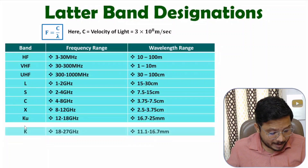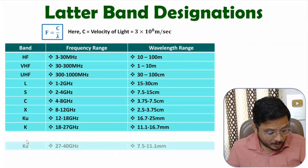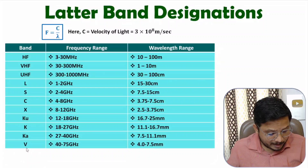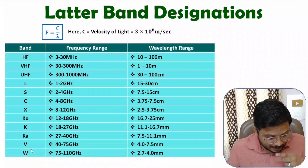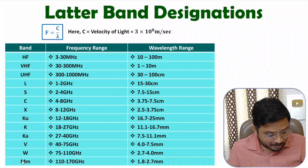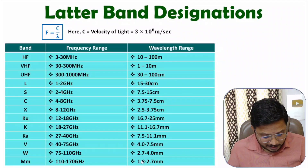After that, we have K band, having frequency from 18 to 27 gigahertz. After that, we have Ka band, having frequency range from 27 to 40 gigahertz. Then we have V band, having frequency from 40 to 75 gigahertz. After that, we have W band, having frequency from 75 to 110 gigahertz. After that, we have the Millimeter band (MM band), having frequency from 110 to 170 gigahertz. With this frequency range, you can observe the wavelength is in terms of millimeters.